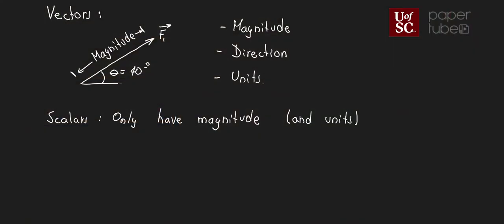Scalar addition is simple: 10 kilograms plus 5 kilograms equals 15 kilograms — you just add the numbers. Vector addition is different because the direction of those vectors matters. If you have a force going down and a force going horizontally to the right, the resultant force is neither purely vertical nor horizontal — it's a combination of those. So when adding vectors we have to account for direction.